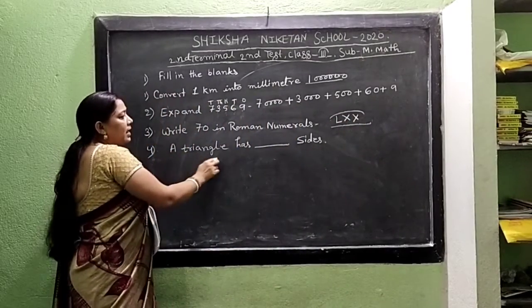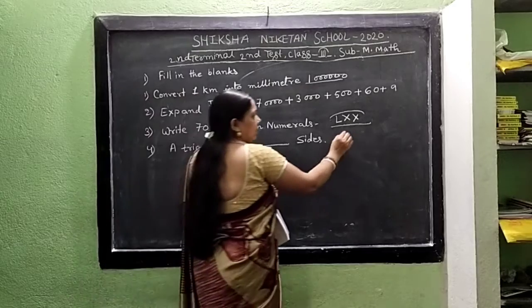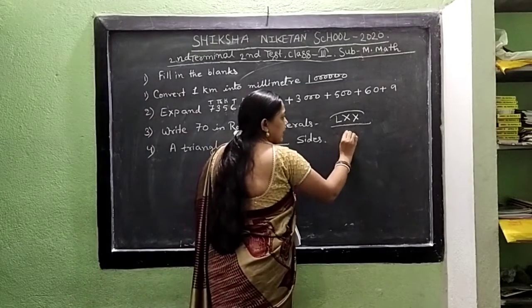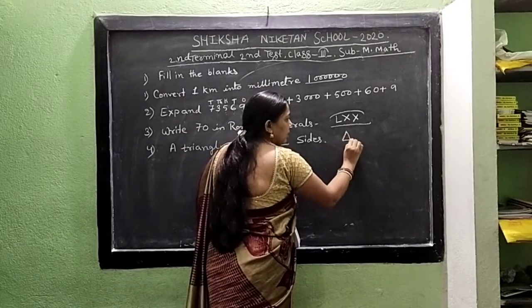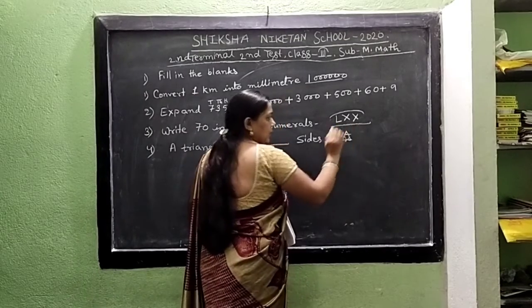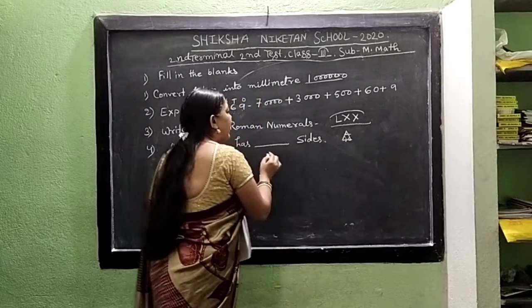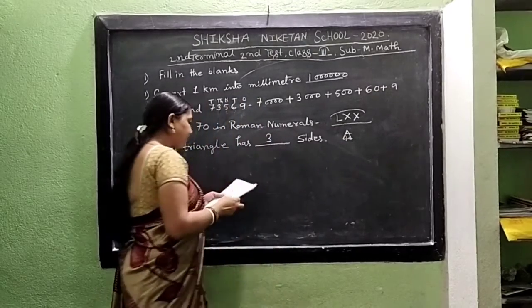A triangle has less sides. We show the shape of a triangle: 1, 2, 3 — 3 sides. So we write here 3.